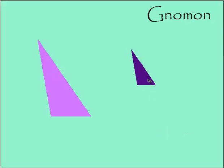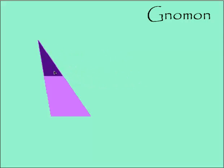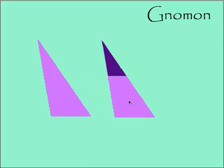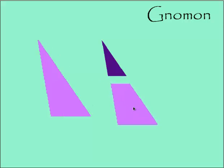So to find a gnomon, I need a shape that if I add it to this small triangle, it's going to make this larger triangle. So if I add this quadrilateral to the little triangle, I get the same size triangle that it's similar to. So this shape is gnomon to the little purple triangle.